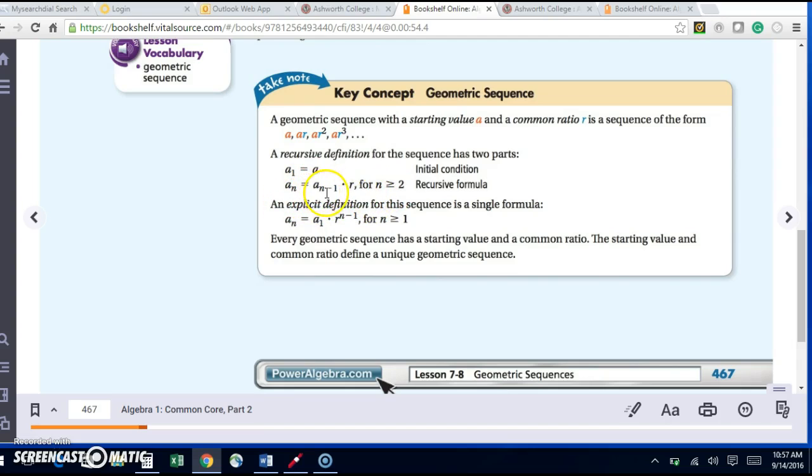And so these are the actual terms. An explicit definition for the sequence is a single formula: A sub n equals A sub 1 times R to the n minus 1 for n greater than or equal to 1.